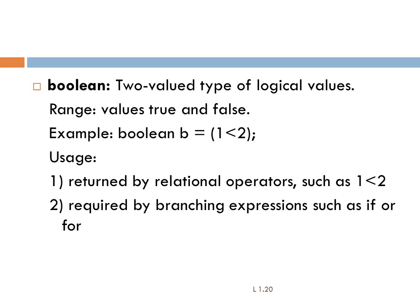Boolean data type supports two types of values: either true or false. True is not represented as 0 or 1 as in C language. True and false are considered separate values in Java. Boolean values are mostly used in if conditions, for looping, while looping, etc.